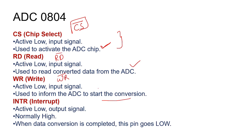Write is also low-enable. Once you give it low, it will start the conversion. For interrupt, the default will be high. Once the conversion process is complete, it goes low. Once interrupt goes low, read low will be enabled. Once read goes low, it will read the data through the pins — D0 to D7 connected through port 1.